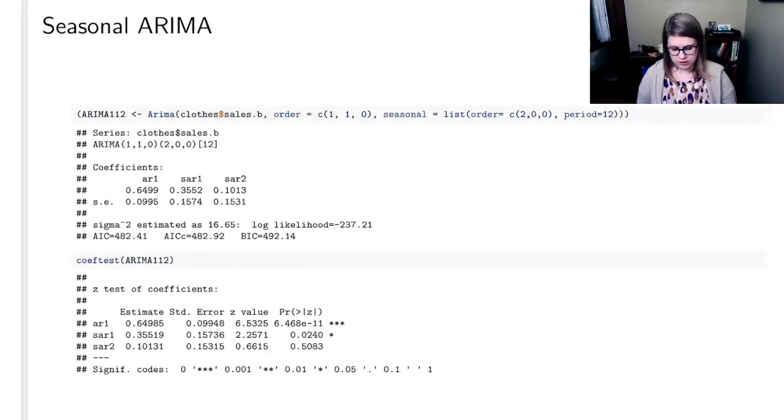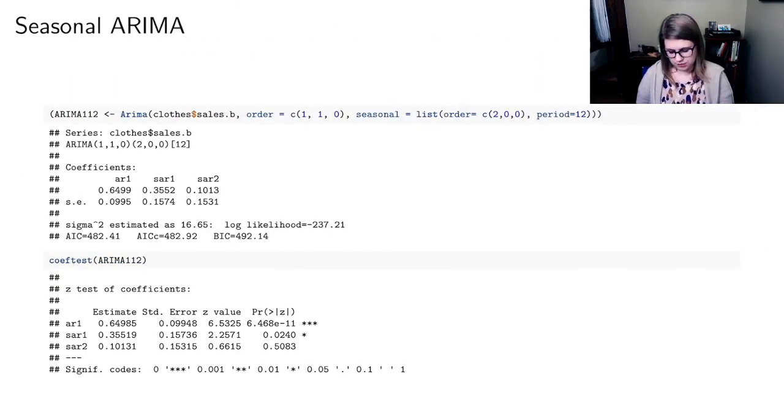So let's do seasonal ARIMA, again, on the sales in billions. In this case, I specify the order, and again, this is the lowercase p, d, q. And then I'm also going to give the seasonal, and it's a little bit more complex, but again, this is going to be p, d, q.